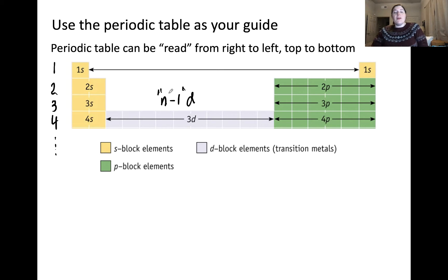Now what that n is, is the principal quantum number, which is also represented by the row. So here we are in row 4. 4 minus 1 is 3. So this is the 3d. Below that would be the 4d and the 5d and so on.